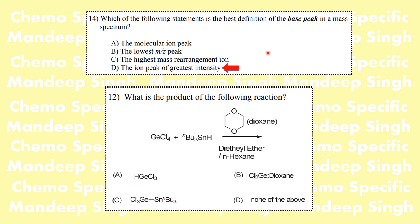The last question is the kind where if you have read about it you will know it, otherwise you will not. Here we have germanium tetrachloride treated with tributyltin hydride in dioxane — this is the reaction for the synthesis of the germanium chloride–dioxane complex.